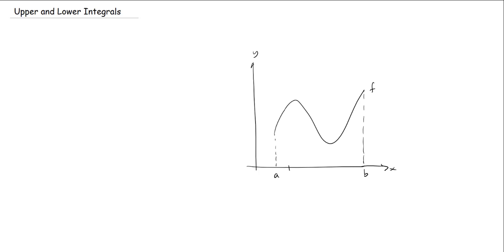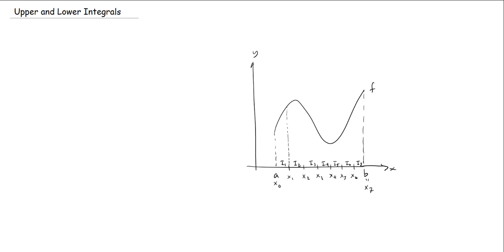What I might do is chop up this interval in the domain into little pieces — that's my partition. So this here could be x₀, x₁, x₂, x₃, etc., with b being x₇. The little piece at the bottom would be I₁, this would be I₂, and so forth. Now on each of these intervals I can draw a little line going up and find the infimum of f.